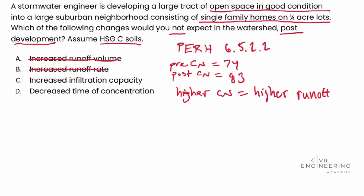Since decreased time of concentration is something we would expect with higher runoff, we eliminate answer choice D. That leaves us with answer choice C as the correct answer — we've successfully solved this problem. If you haven't already, check out civilengineeringacademy.com for more practice problems and PE Civil depth and breadth review courses. All of us at Civil Engineering Academy are happy to walk with you on your journey towards becoming a licensed PE and acing your exams.